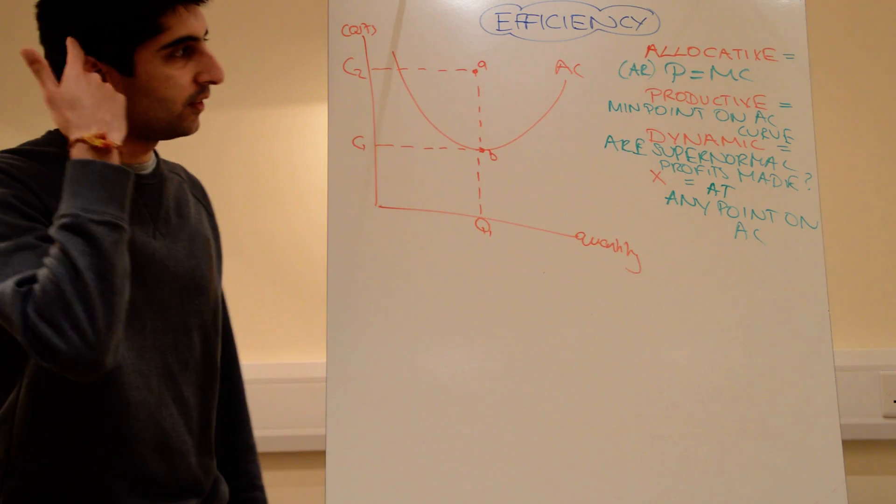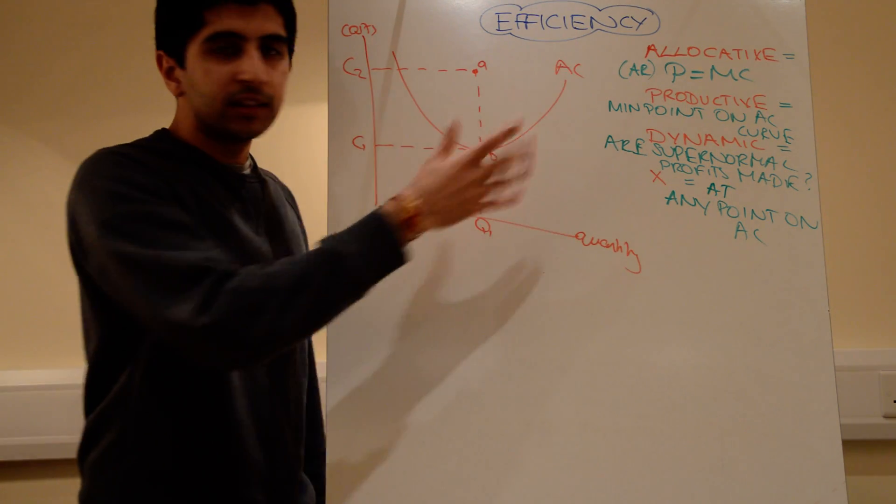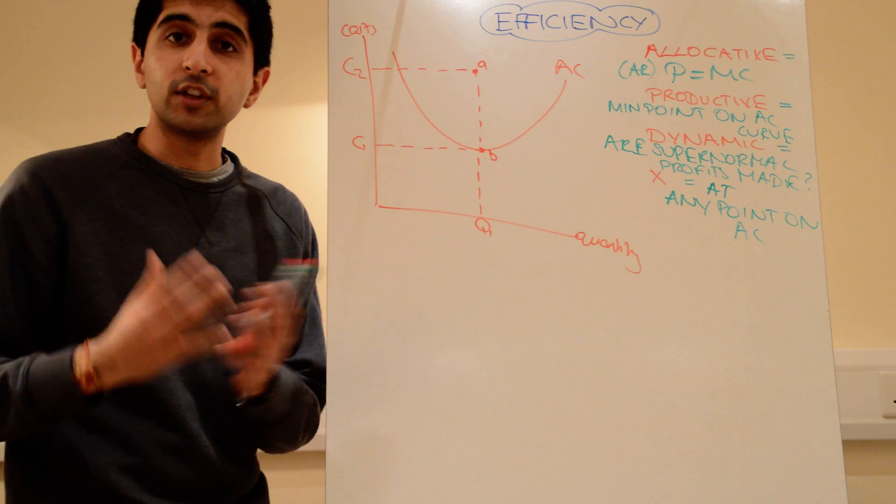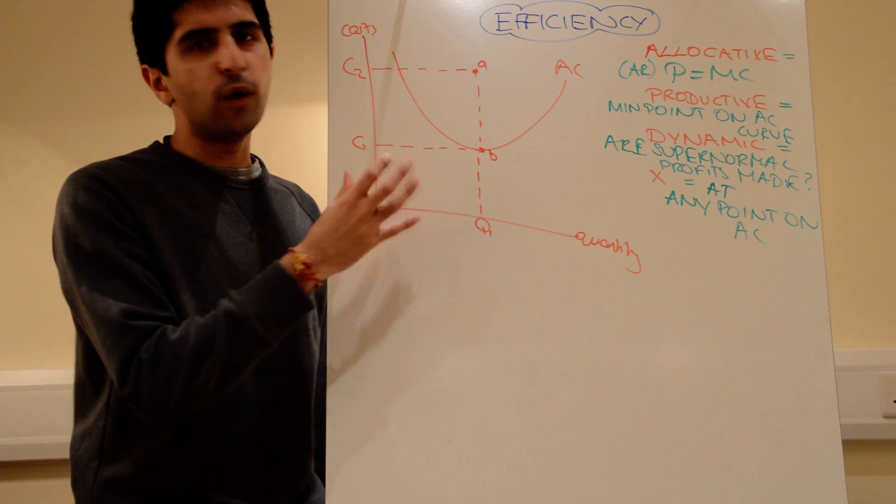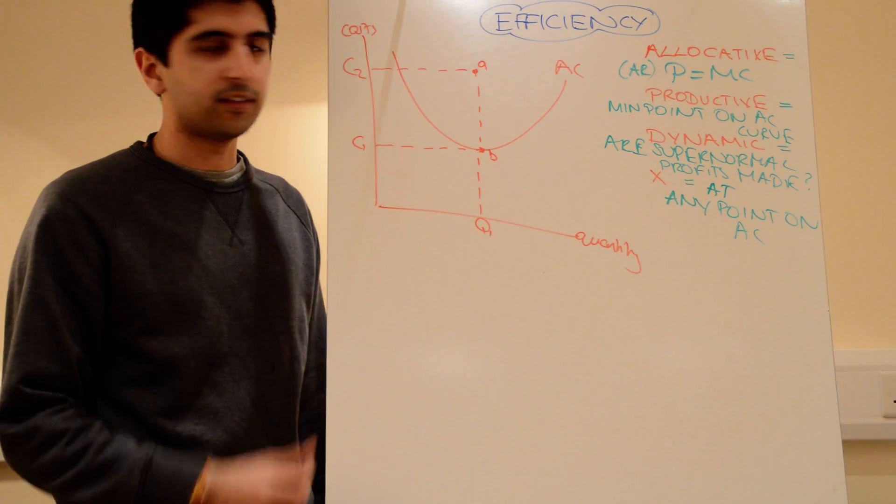You've got all these four different efficiencies there. And these are the main efficiencies that we use to compare different market structures. I hope that all makes sense. Nice and simple. Don't over confuse efficiencies. It's a lot easier than it might seem. See you next time.